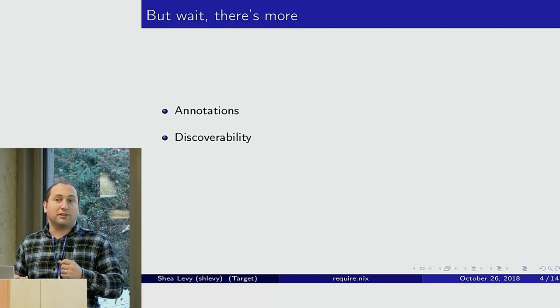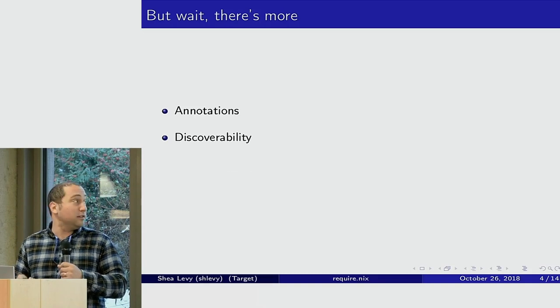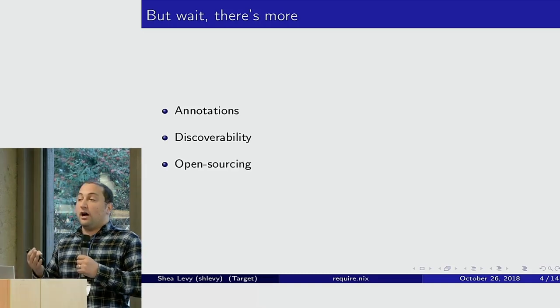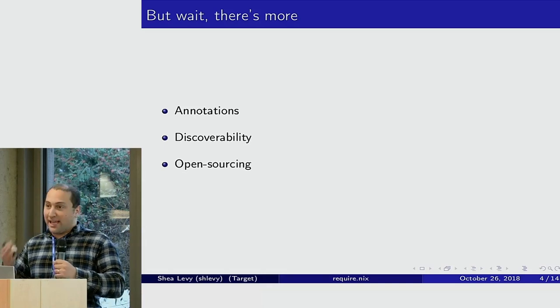Finally, open sourcing is actually very difficult, at least in my experience. Because we have these monolithic company Nix repos that combine generic functionality we'd love to share with private package sets and other things. If we open sourced it, we'd have to break out that functionality — and we wouldn't even use the thing we open sourced, because we have no way to combine it back into our big monorepo.